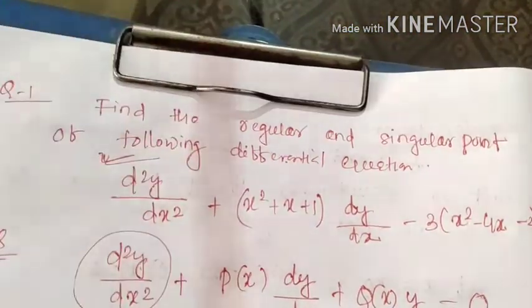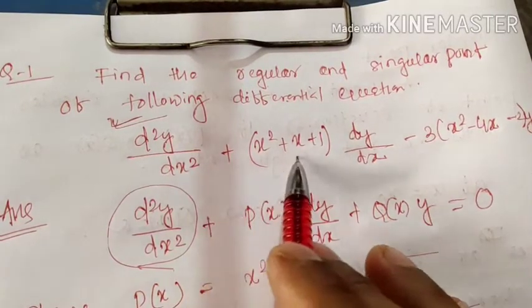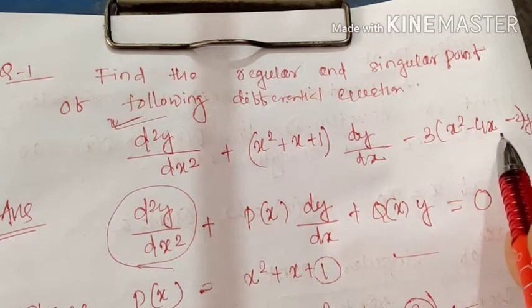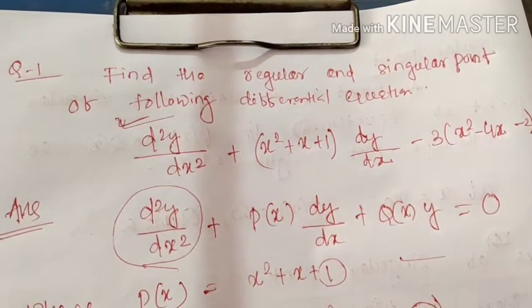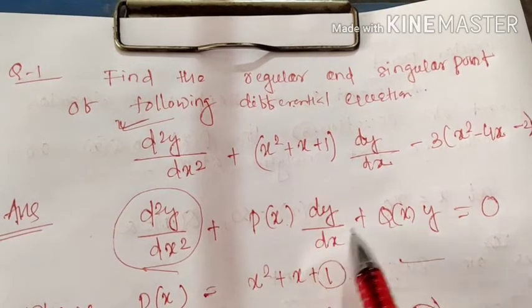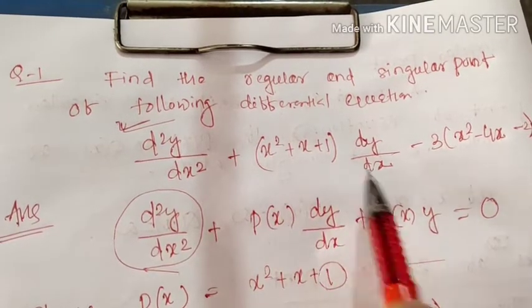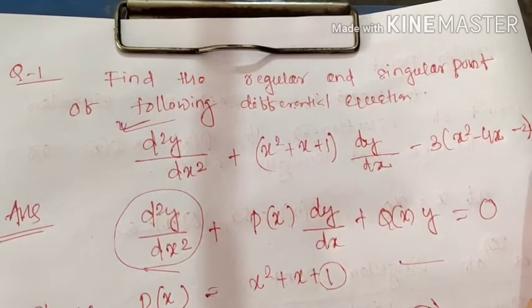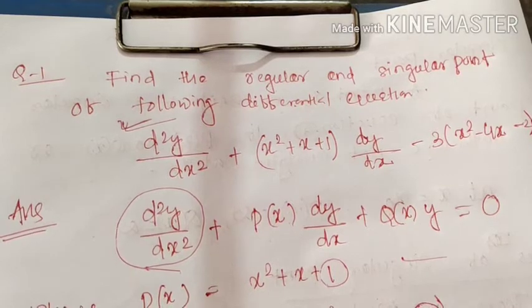Example 1: Find the regular and singular points of the differential equation d²y/dx² + (x² + x + 1)·dy/dx − 3(x² − 4x − 2)·y = 0. Comparing with the standard form, p(x) = x² + x + 1 and q(x) = −3(x² − 4x − 2).